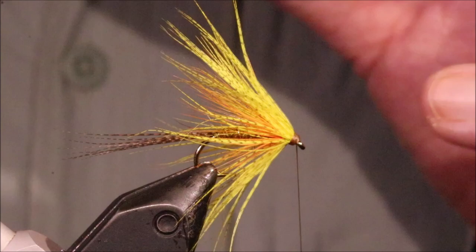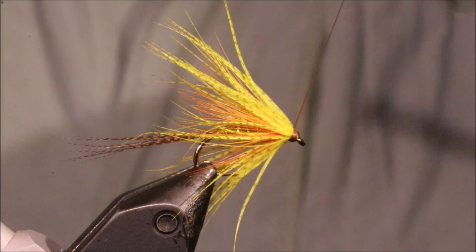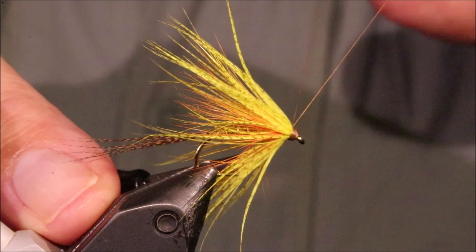You can sort of pull at these fibres. Sort of, sweep them forward and push them back. And that will knock the twist that you've put in them, back out. Then it's just a case of whip finishing.